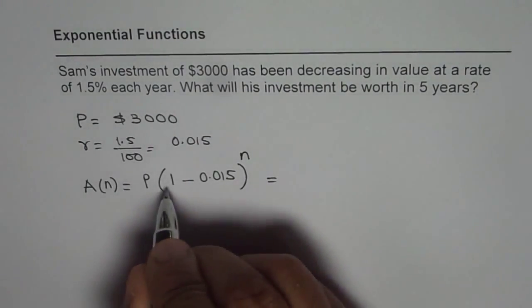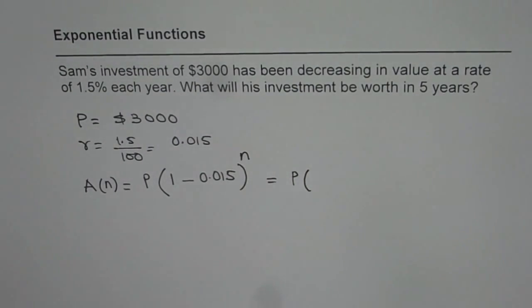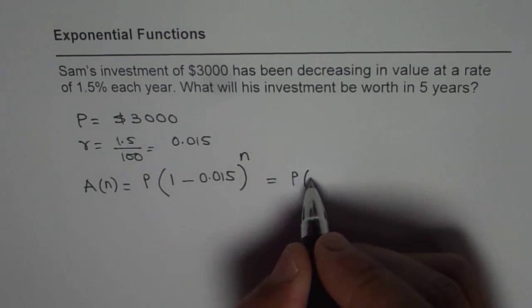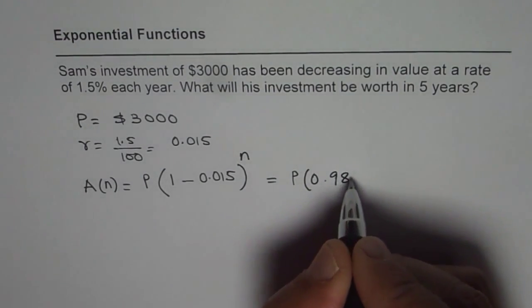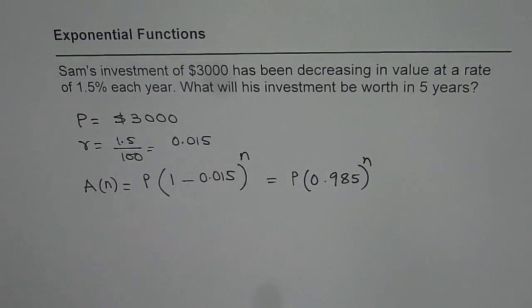We can simplify it. You'll need a calculator. We will do 1 minus 0.015 and that gives you 0.985 to the power of n. That is the general formula.